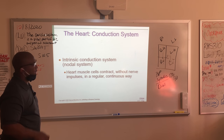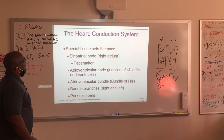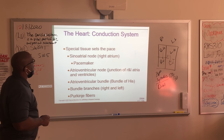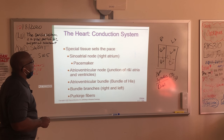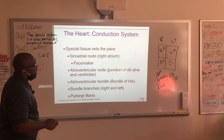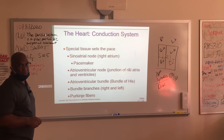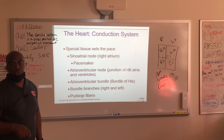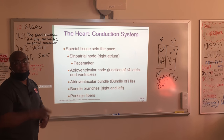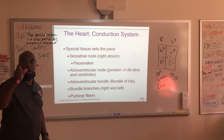It's an intrinsic conduction system, a nodal system — nodal meaning the SA node and AV node. Special tissue sets the pace. The SA node, or sinoatrial node, sits in the right atrium. It is the natural pacemaker — that's what it's called, and you will see that on a quiz. It's what makes the rhythm of the heart.